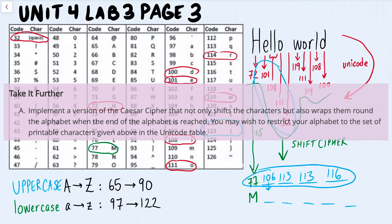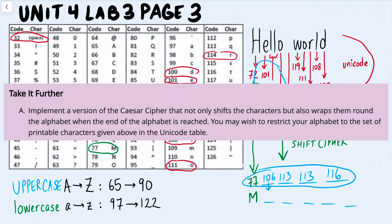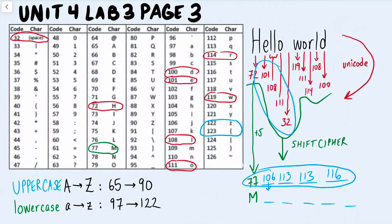For the take it further, it says to implement a version of the Caesar cipher that not only shifts the characters, but also wraps them around the alphabet. When the end of the alphabet is reached, you may wish to restrict your alphabet to the set of printable characters given above on the Unicode table. I think what they're trying to say is that you want to take any characters that aren't letters and make sure they become letters.